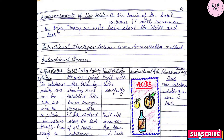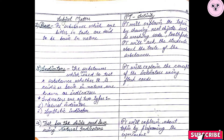Then comes the announcement of the topic and the strategy used by the PT, that is the lecture-cum-demonstration method. Then comes the instructional processes, which involves five columns: the first is subject matter, the second is PT activity, the third is pupil activity, the fourth is instructional aids or the DLM, and the last column is blackboard writing.